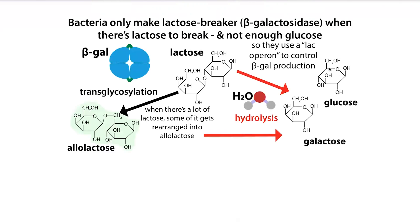Beta-gal is made as part of this lac operon, which is basically just a group of genes that are regulated at the same time, so they're all made together. This lac operon is going to make the beta-galactosidase as well as other genes needed for lactose breakdown, import, and all of that. But the one we care about is beta-galactosidase. Beta-gal, as I'll be referring to it, has a couple of functions.